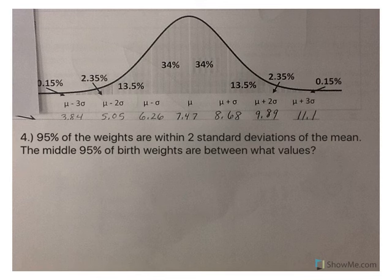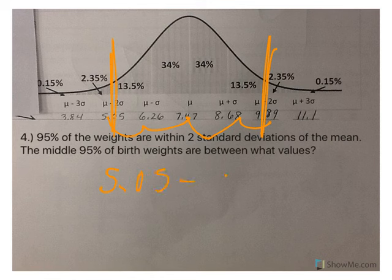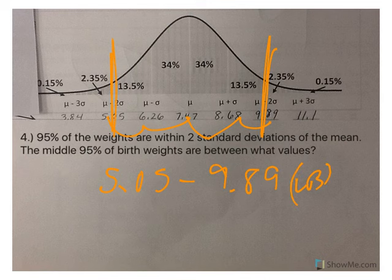Number four: 95% of the weights are within two standard deviations of the mean. The middle 95% of birth weights are between what values? Here's the mean: 1, 2, 1, 2. So between here and here is 95% of my data. That means from 5.05 to 9.89, and those are in pounds. So 95% of babies born will have birth weights between 5.05 pounds and 9.89 pounds.